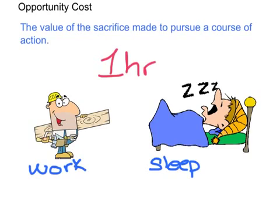Opportunity cost is perhaps the most important of our three costs. It describes what is given up or sacrificed to pursue a given course of action. The opportunity cost is the next best alternative to the decision that you make.